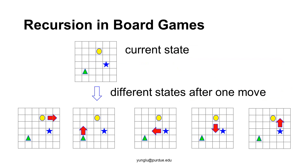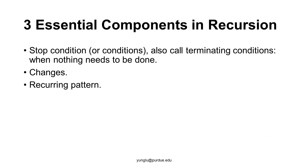The third example uses recursion in a board game like chess or Go. Imagine the current state of the board has several pieces, and there are several options from the current state — for example, a player may move one of several pieces. These options lead to new board states. The first essential component of recursion is the stop condition, also called the terminating condition — when recursion ends and nothing more needs to be done. For QuickSort, the stop condition is when the array has been sorted. For binary search, it is when we know whether the searched value is in the array. For the board game, it is when one player wins.